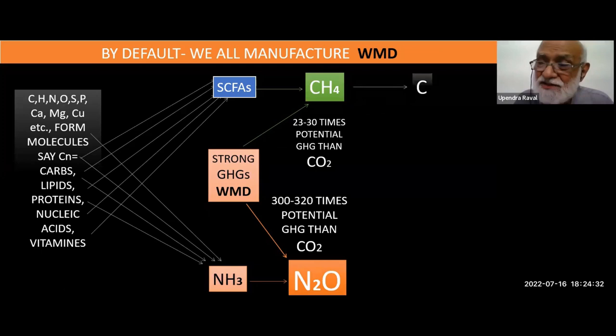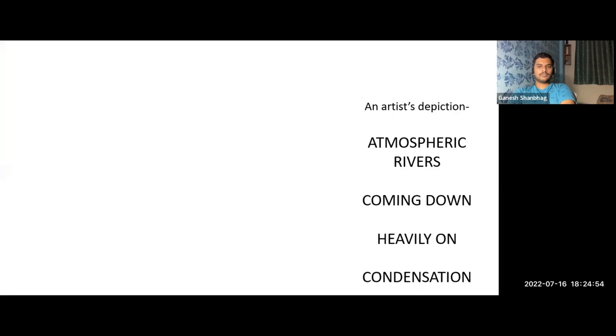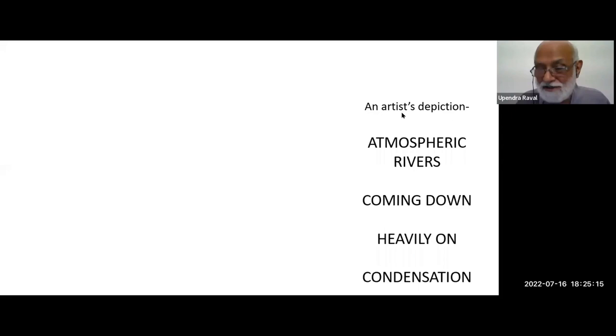Methane has to be sequestered into carbon. N2 should be sequestered to nitrogen. That is the role of fungi. Each member playing for the safety of all life on this planet will have to be considered. Here is an artist's depiction — the atmospheric rivers coming down heavily on condensation.